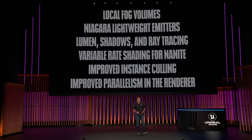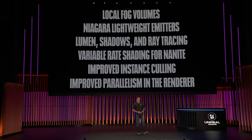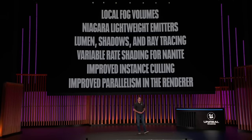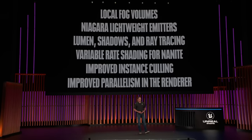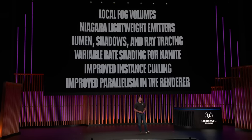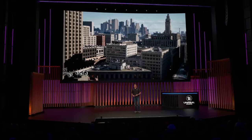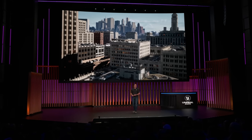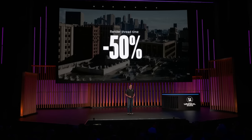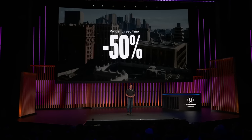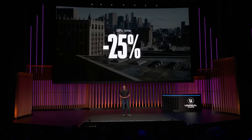We've added variable rate shading for Nanite. We massively improved instance culling, and we significantly improved parallelism in the renderer. You name it, we made it faster. With the city sample demo that shipped in 5.0, our console tests showed that the render thread time was reduced by 50%, and the GPU time decreased by 25%.